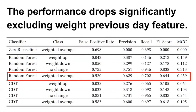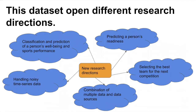We are now looking at what other research directions are possible using this dataset. In this diagram, we show a few from a large number of possible directions. Using this kind of dataset, we can find a correlation between a person's well-being and sport performance. Similarly, the readiness of a person is another parameter that can be predicted. We can also do experiments to find suitable mechanisms to remove noisy time series data or develop data cleaning methods, since this dataset contains noisy data.